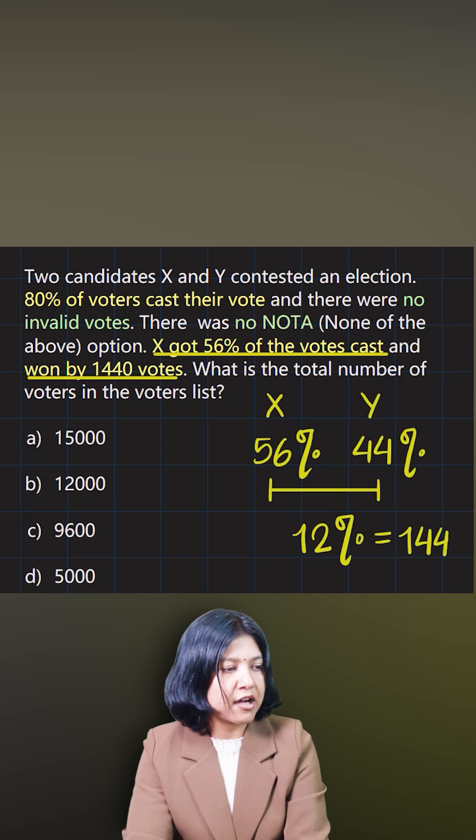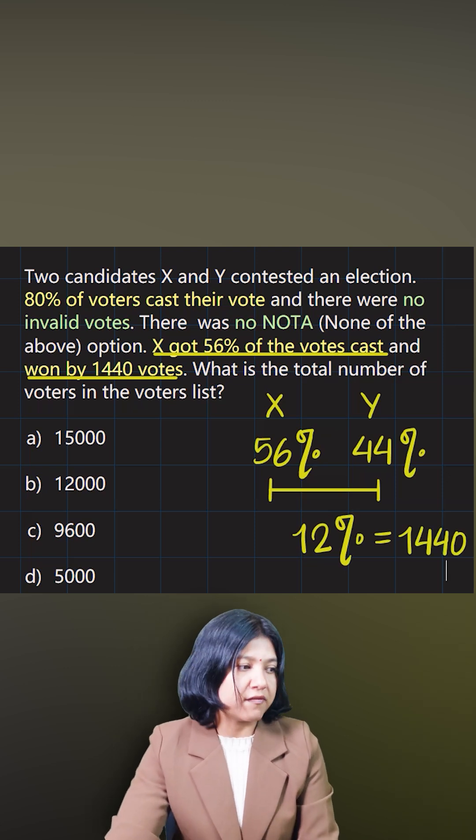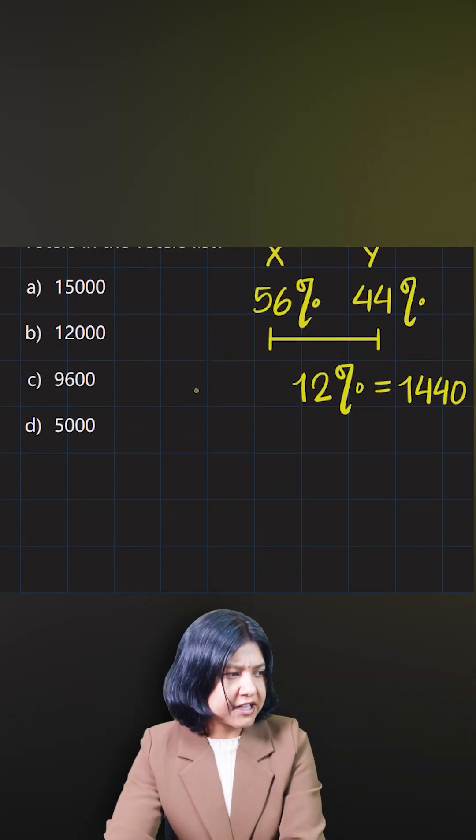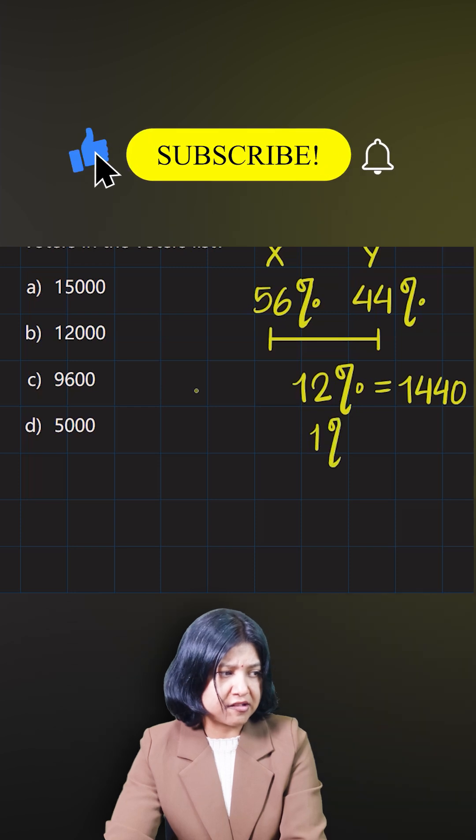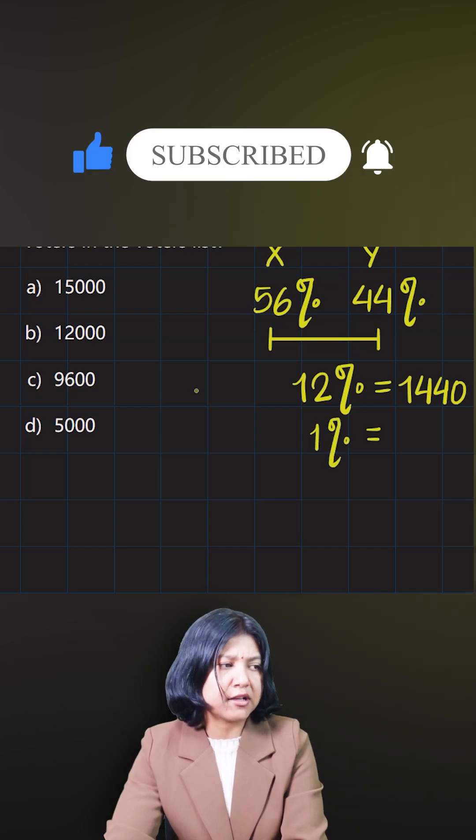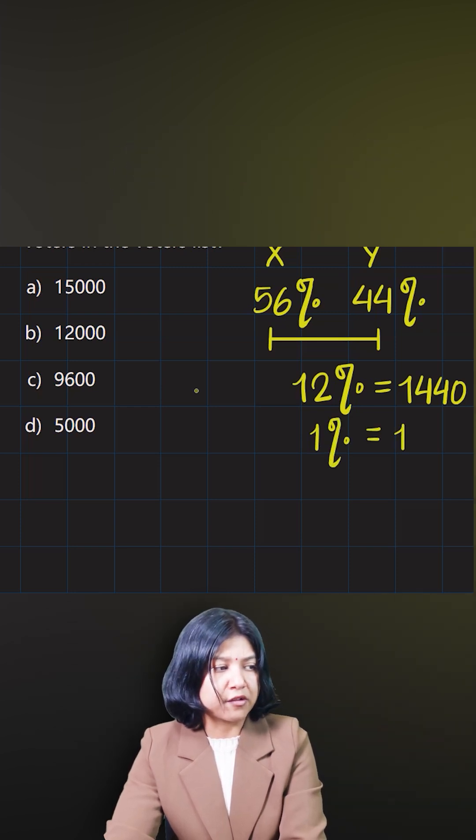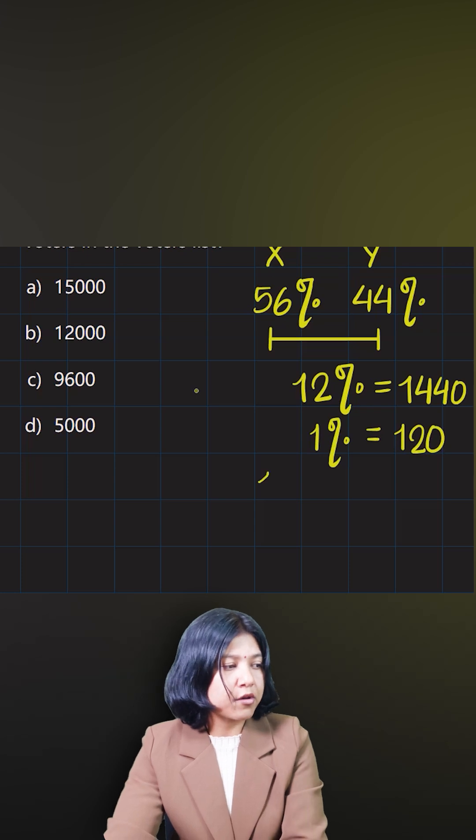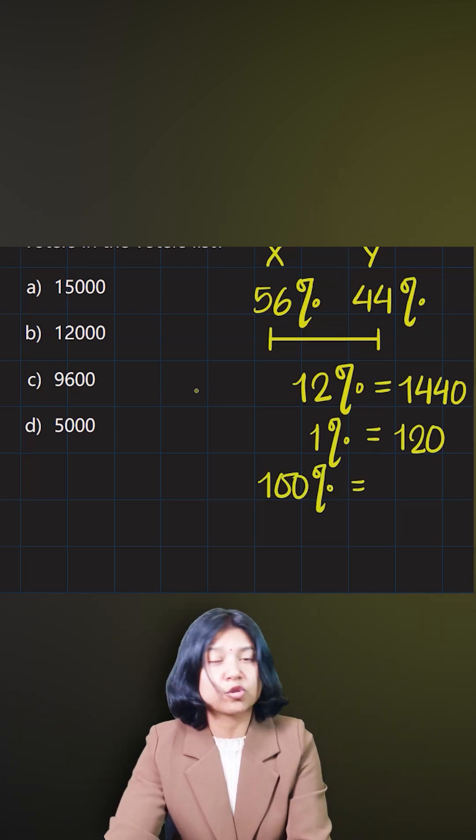So if I know 12%, I can find 1% quickly by dividing both sides by 12. 1440 divided by 12 gives me 120. Now I want to find 100%. Note that 100% represents the total number of voters who voted.